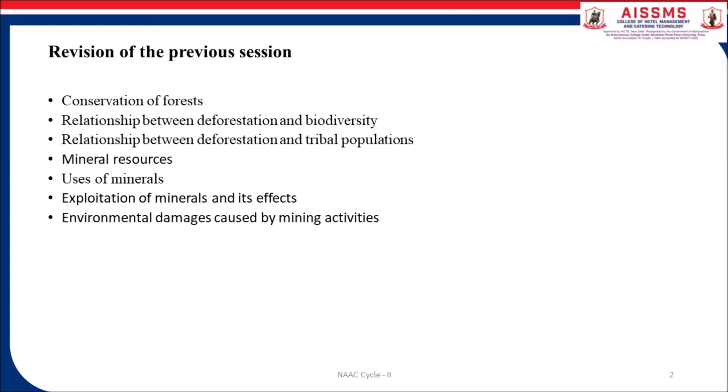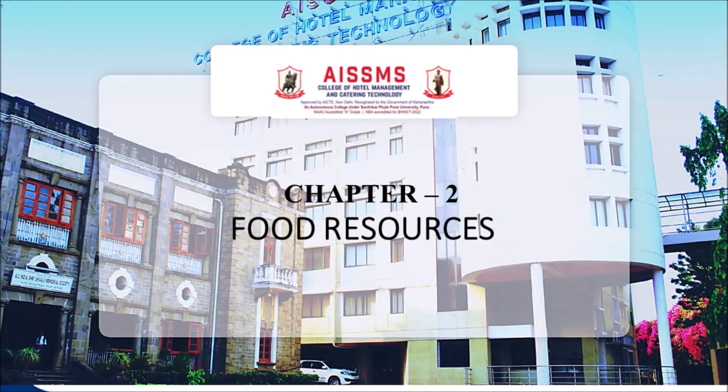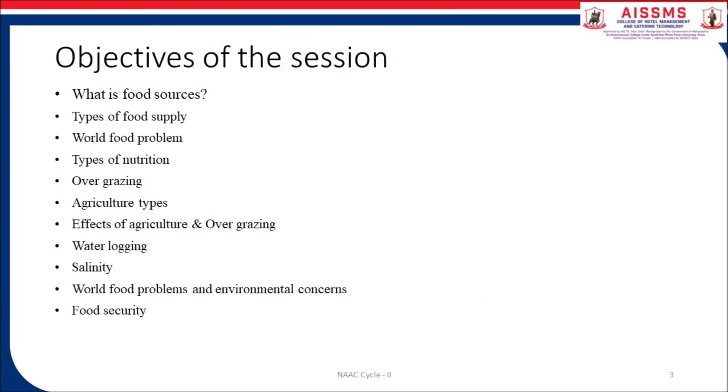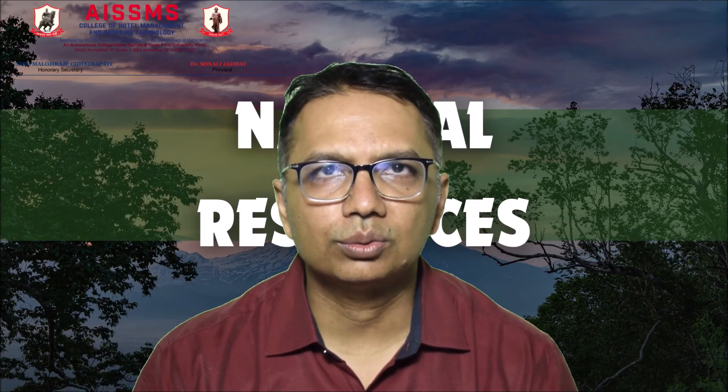So let us begin with today's session with the objectives. Today we are going to learn what is food resource, different types of food supply, world food problems, types of nutrition, overgrazing, agriculture types, effect of agriculture and overgrazing, water lodging, salinity, world food problem and environmental concerns, and food security.